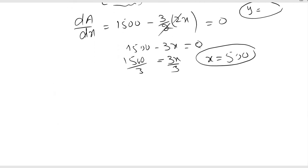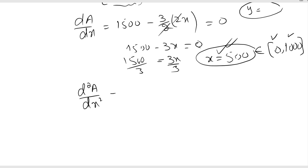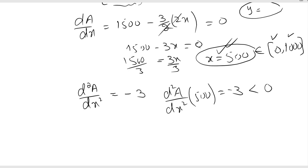Since x equals 500 belongs to the interval [0, 1000], we check whether it gives a maximum. Taking the second derivative of the area function gives minus 3. Since minus 3 is less than 0, the second derivative test confirms that there is a relative maximum at x equals 500.